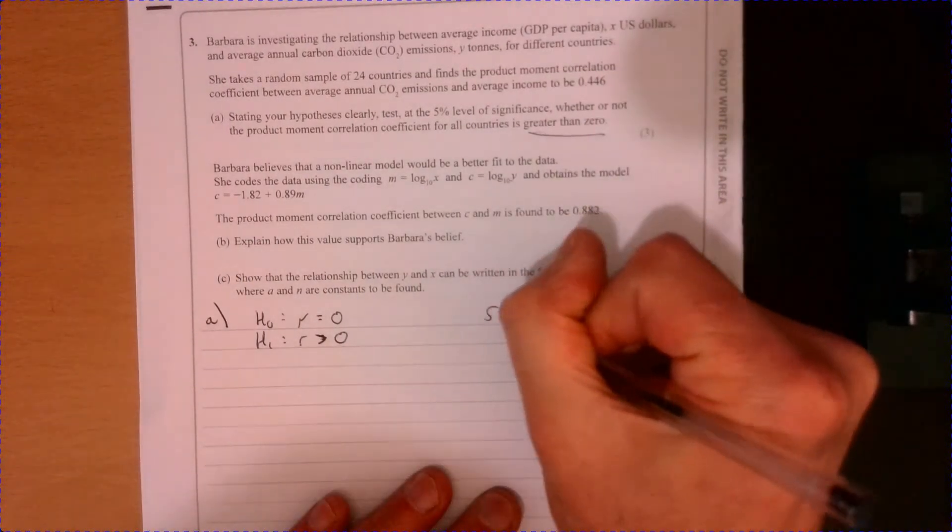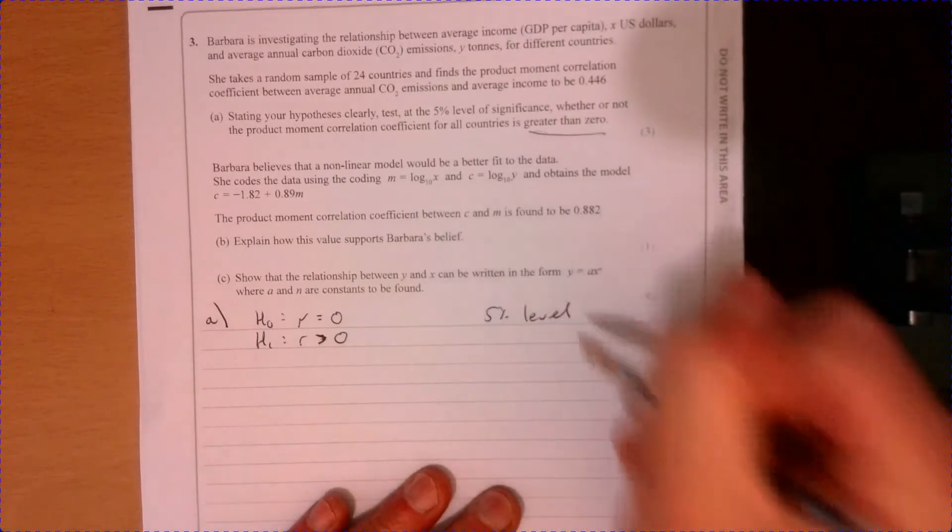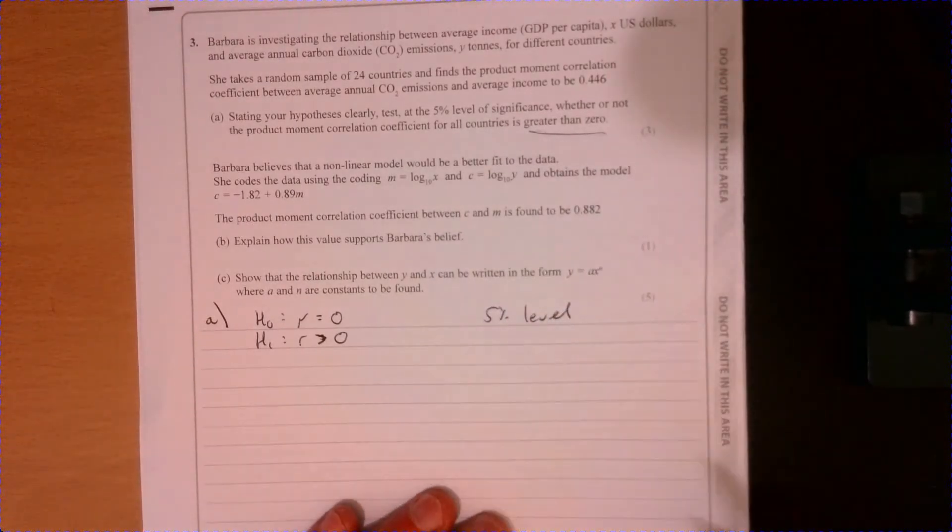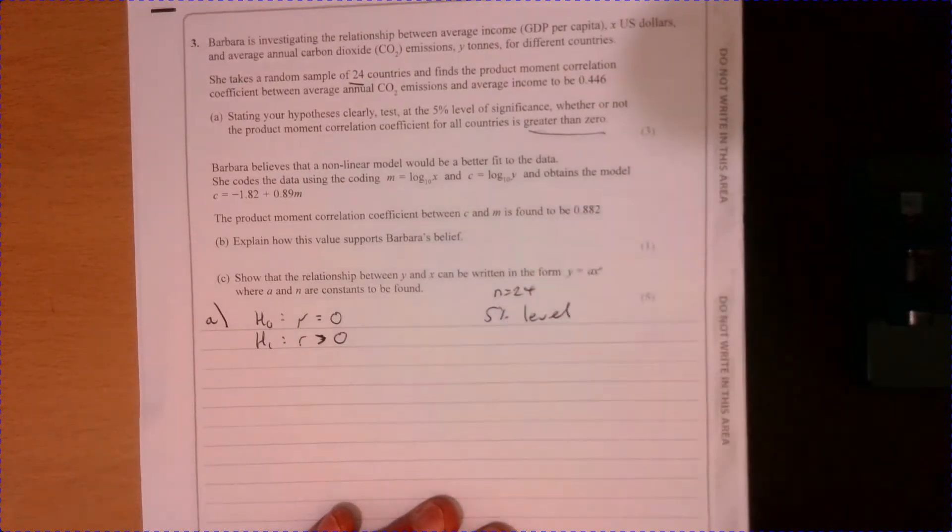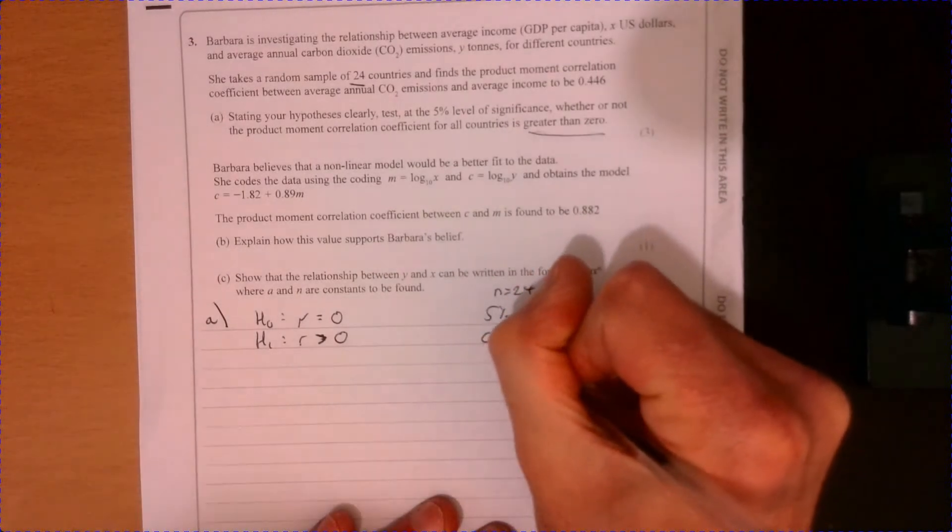So we're looking at 5 percent level. There's 24 countries. So let's just make a note about 24 countries. Now, I need to know the critical value.